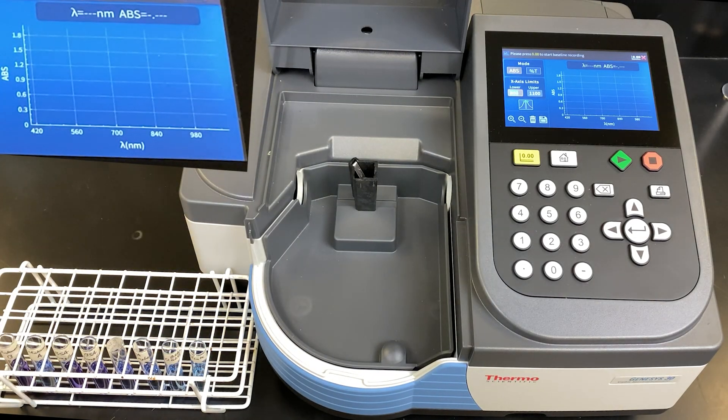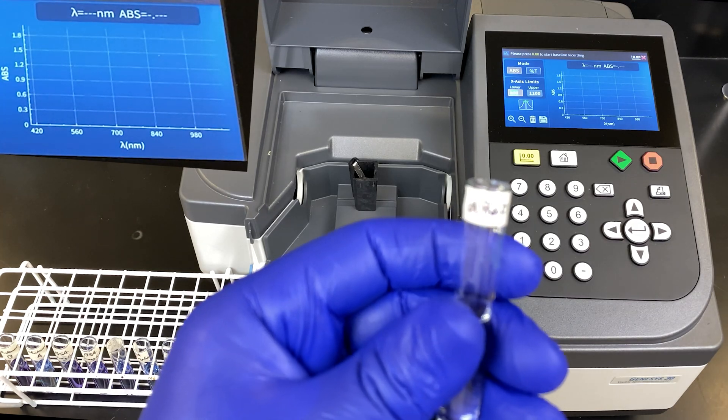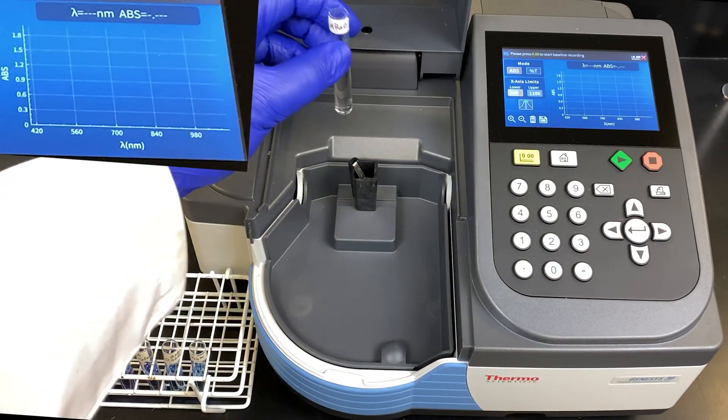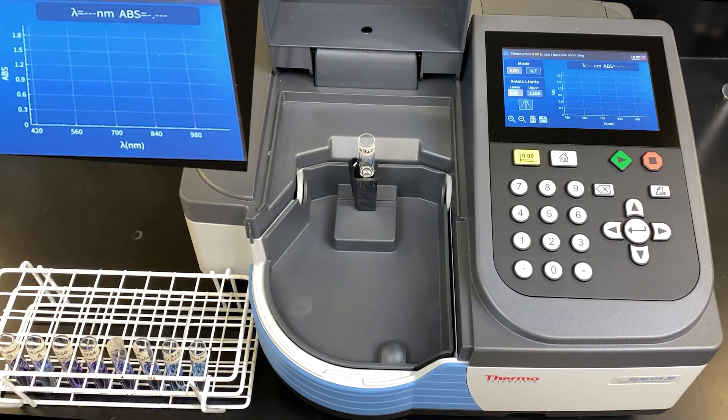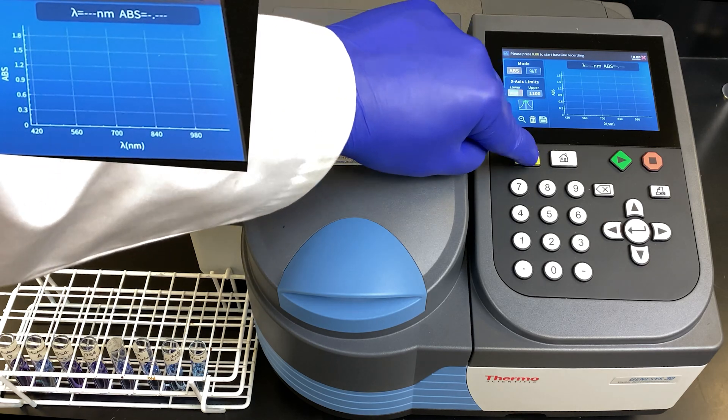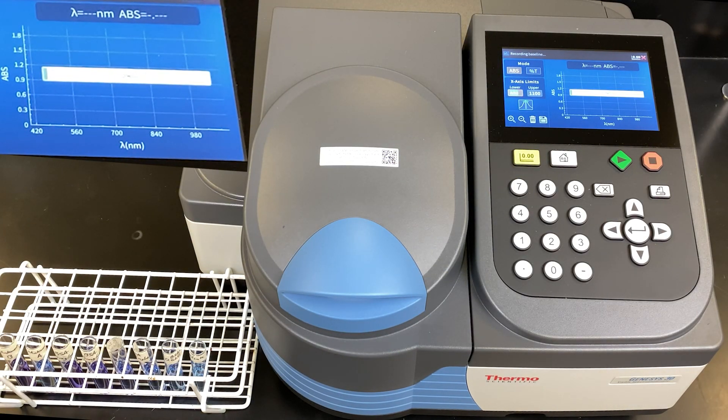We will begin with doing the automated scan on the Genesis 30 to determine what the Amax is. To do that, we will take our water sample to blank for the absorption spectrum, distilled water. Place it into the machine, close the door, and it says press the blank button. It is the yellow button. We press that, and it starts off.